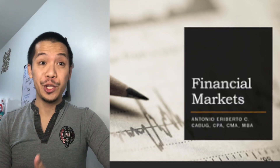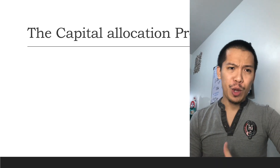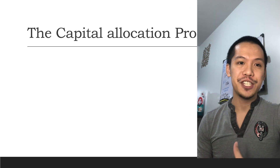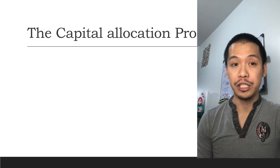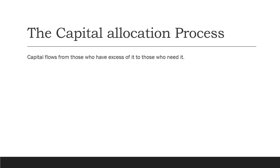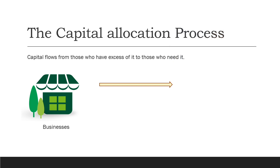Hi guys, welcome back. Today we are going to talk about financial markets. To appreciate the need for financial markets, we must acknowledge the need for an efficient capital allocation process. For the economy to prosper, in an ideal economy, capital should flow from those who have excess of it to those who need it. Say a booming business — one which needs funds — if there are no more funds available, then it will lose the investment opportunities it could have taken.